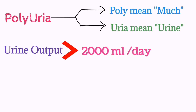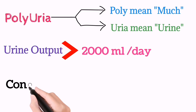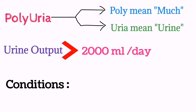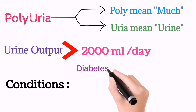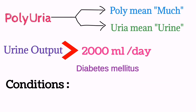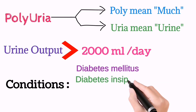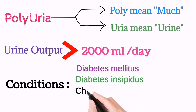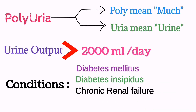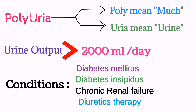Conditions related to polyuria include diabetes mellitus, diabetes insipidus, chronic renal failure, and diuretic therapy.